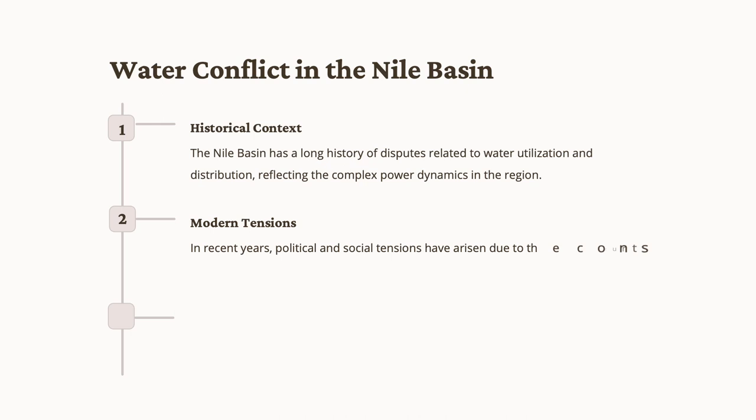In contemporary times, the construction of the Grand Ethiopian Renaissance Dam (GERD) has heightened tensions within the Nile Basin. Ethiopia's efforts to harness the Nile's water for energy and development have raised concerns among downstream nations, primarily Egypt. This modern dispute highlights the challenges of balancing national development aspirations with the equitable sharing of transboundary water resources.